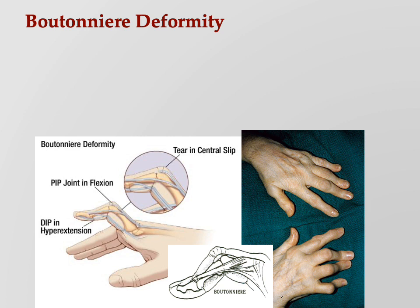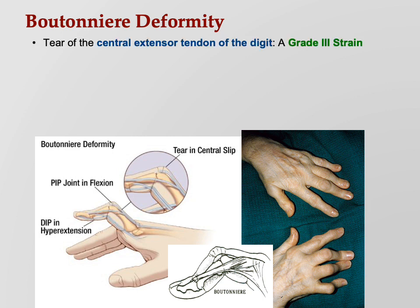This was a lot more fun in class when I could show you my boutonniere deformity. I asked about this on the homework, so you had no way of knowing what was going on. It's a tear of the central extensor tendon. This is a somewhat common disorder of joints called a boutonniere deformity — a grade 3 strain.